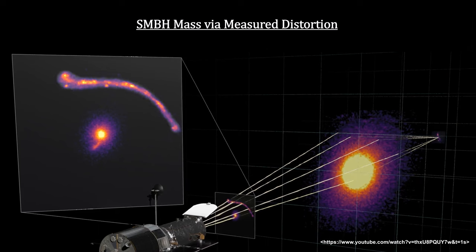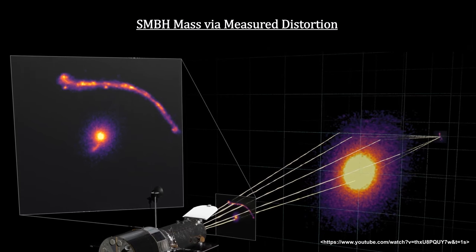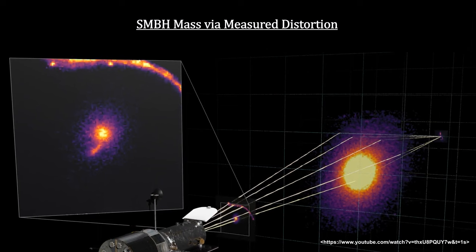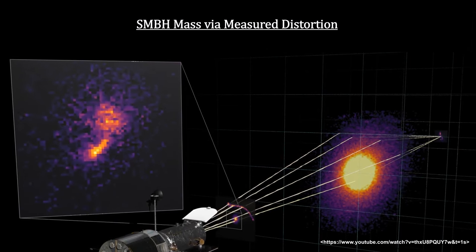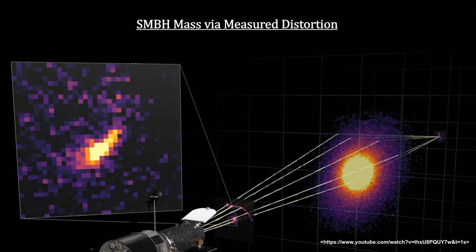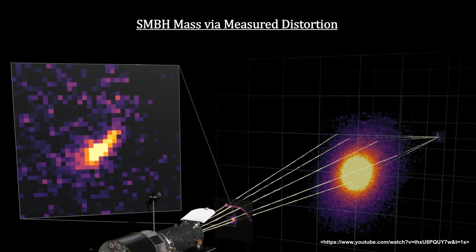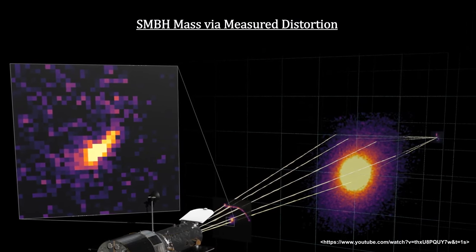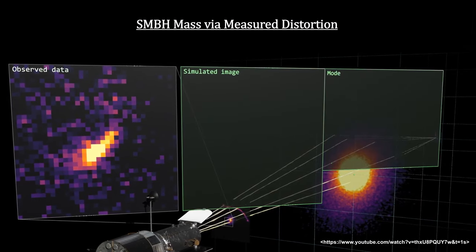In this example, the lensing galaxy distorts the distant galaxy image into a wide arc. In addition, some of the light passes near the central black hole. The black hole acts as a lens and forms a duplicate image of the distant galaxy.